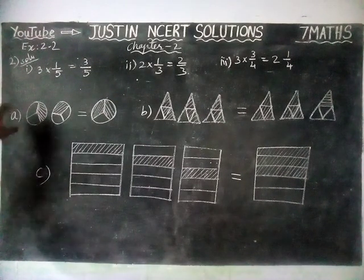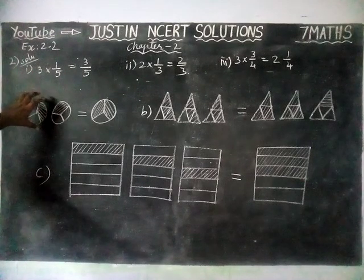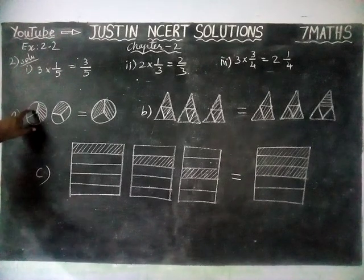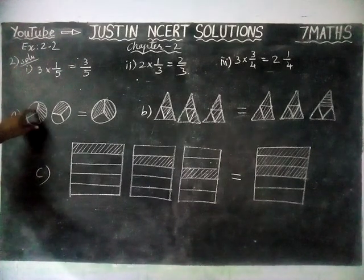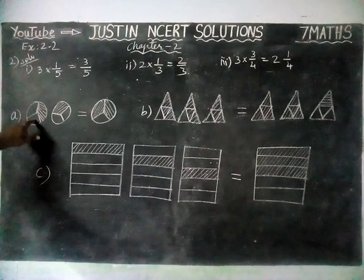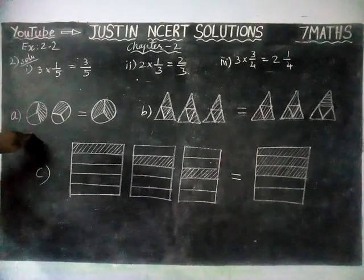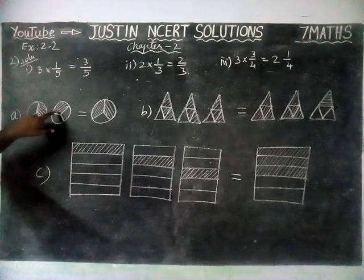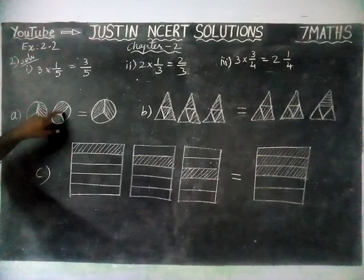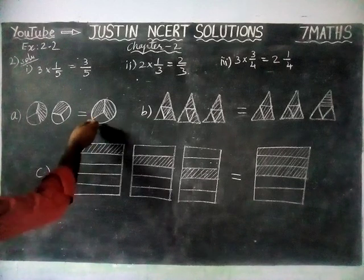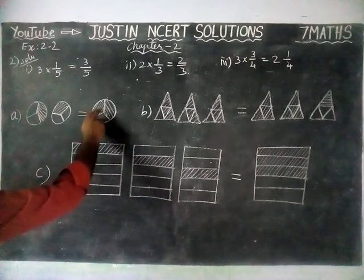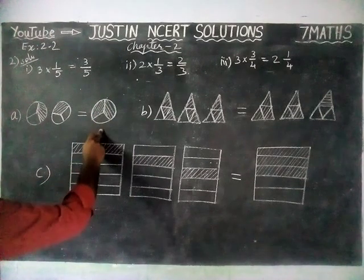Here, the first diagram, A is equal to — totally three parts, it is separated as three parts: one, two, three. And in this three, one is added, so this is one by three. And here, this is also totally three parts — out of three, one is added, so one by three.